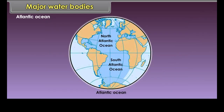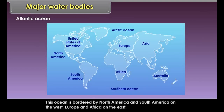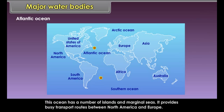The Atlantic Ocean is almost half the size of the Pacific Ocean. It is S-shaped and covers nearly one-sixth of the Earth's surface. It is bordered by North America and South America on the west, and Europe and Africa on the east. It interconnects the Arctic Ocean in the north and the Southern Ocean in the south. This ocean has a number of islands and marginal seas, and provides busy transport routes between North America and Europe.